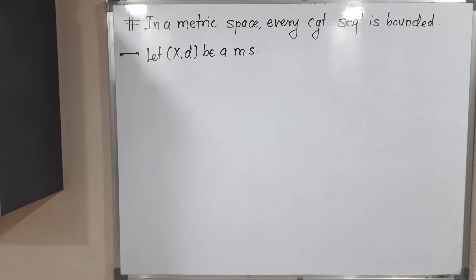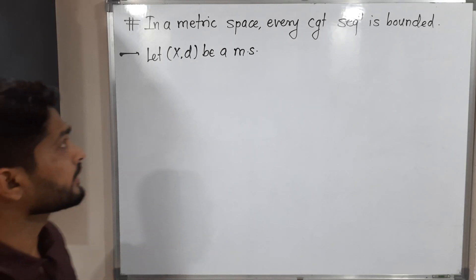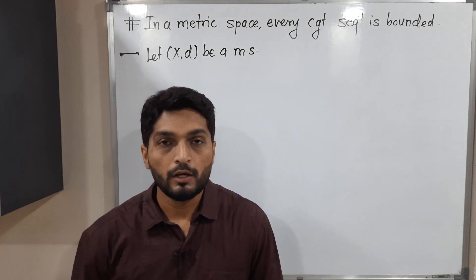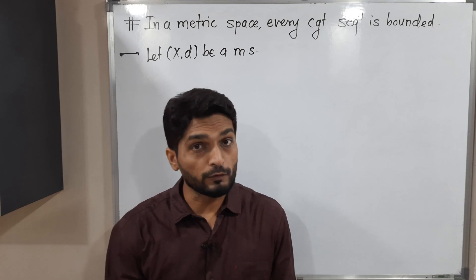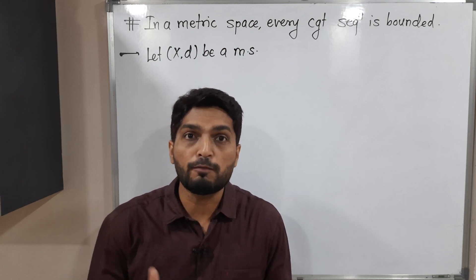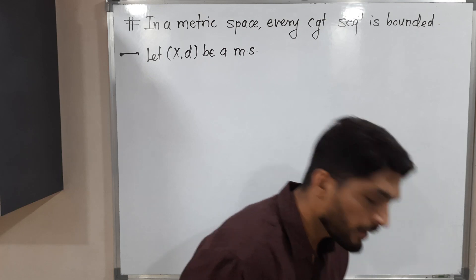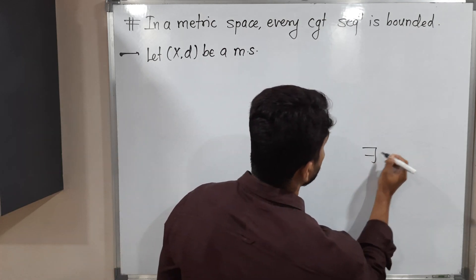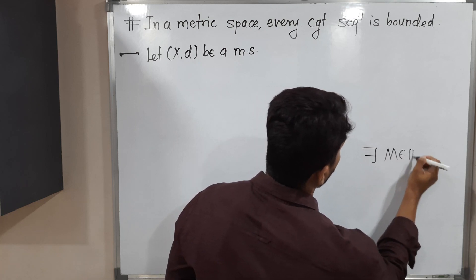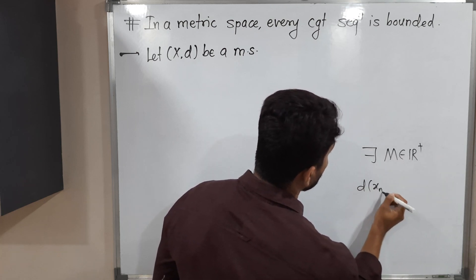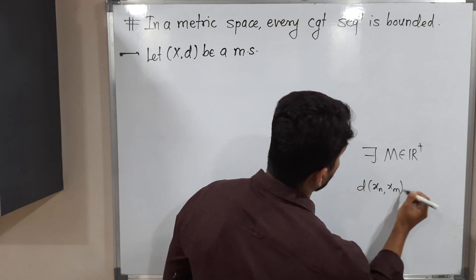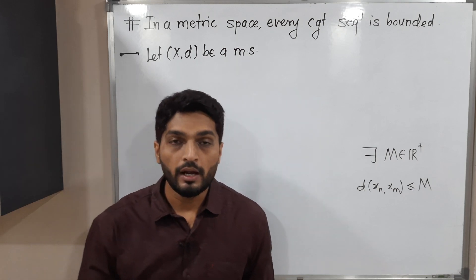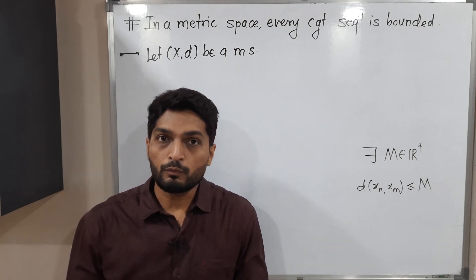In this video we are going to discuss the result that in a metric space every convergent sequence is bounded. A bounded sequence means there should be some positive real number M such that the distance between any two points of the sequence should be less than or equal to M. Our target is to prove this.